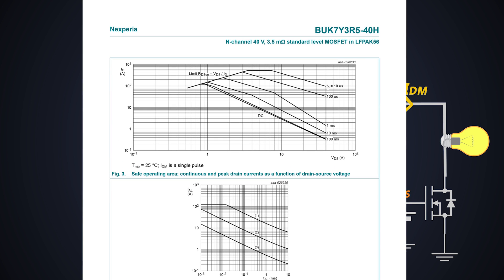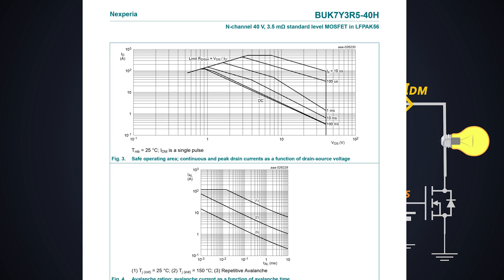This graph is called as safe operating area of the MOSFET. It shows a MOSFET can work without exploding like a grenade. We can talk more about this later.